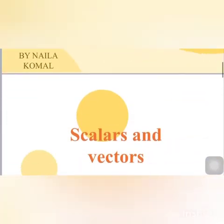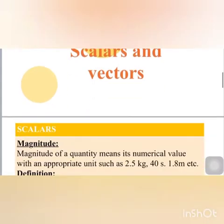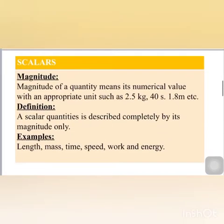Number two: kinematics. Ninth class physics topic is scalar and vectors. First, I will define scalars. The magnitude of any quantity means its numerical value — for example, five, six, seven. If we add units, for example 2.5 kg with an appropriate unit, 40 seconds means we are talking about time, and 1.8 meters means we are talking about length. A scalar quantity is described completely by its magnitude only.